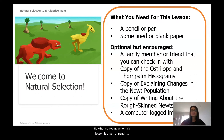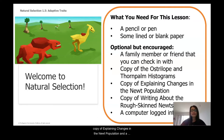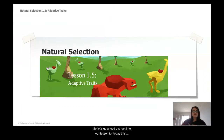What you'll need for this lesson is a pen or pencil, some lined or blank pieces of paper, and optionally but encouraged, a family member or friend you can check in with. You'll also need a copy of the Ostrilope and Thorn Palm histograms, a copy of Explaining Changes in the New Population, and a copy of Writing About the Rough-Skinned Newt. It's also great if you have a computer logged in to Amplify. Let's get into our lesson.